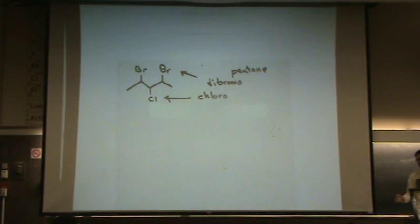If there's more than one, like dibromo, tribromo, tetrabromo, etc. Again, you put them in alphabetical order, just like before.